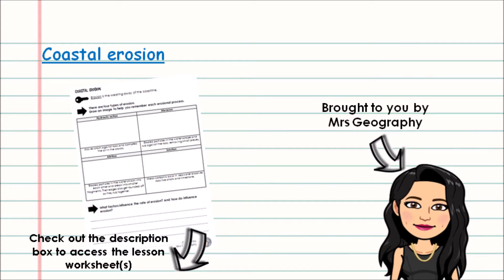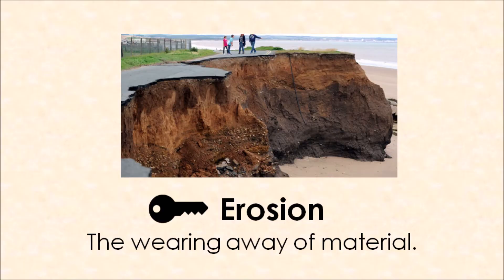When we think about the term erosion in geography, we're thinking about the wearing away of material. Specifically in this video we're looking at erosion on the coastline — the wearing away of the coastline — and when erosion does take place there are four main ways that the coastline can be eroded by the force of the waves.